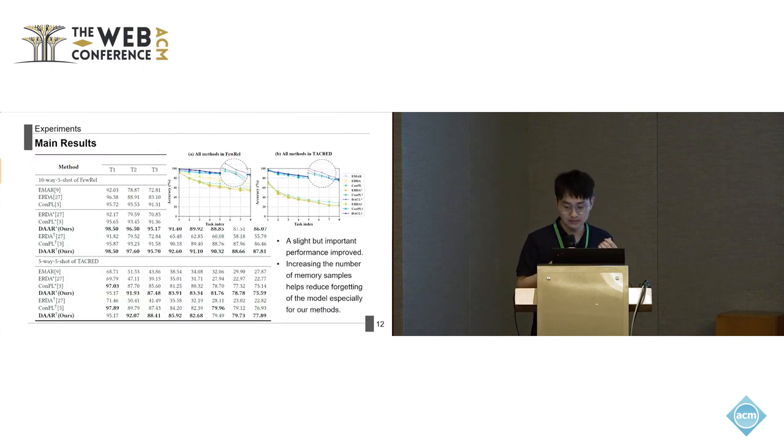Turning to the main results from our experiments, which are displayed in the tables and the graphs. Our experimental setup involves dividing the learning process into eight distinct tasks and doing the continual learning in it. The results clearly demonstrate several key points. First, our models have a slight but significant improvement across the tasks. Second, increasing the number of memory samples has been notably beneficial, particularly evident in the enhanced performance of our methods compared to the baseline.